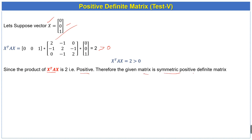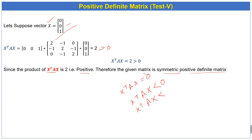Therefore, since the product x^T A x is positive, the given matrix is a positive definite matrix. It would be semi-definite if the product equals zero, and negative definite if the product is less than or equal to zero.